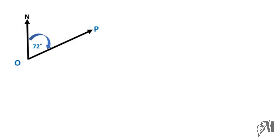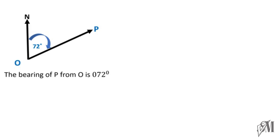In this example, with respect to O, P is at an angle of 72 degrees. The bearing of P from O is written as 072 degrees — we put a zero in front of 72 because bearings must be represented with three digits.